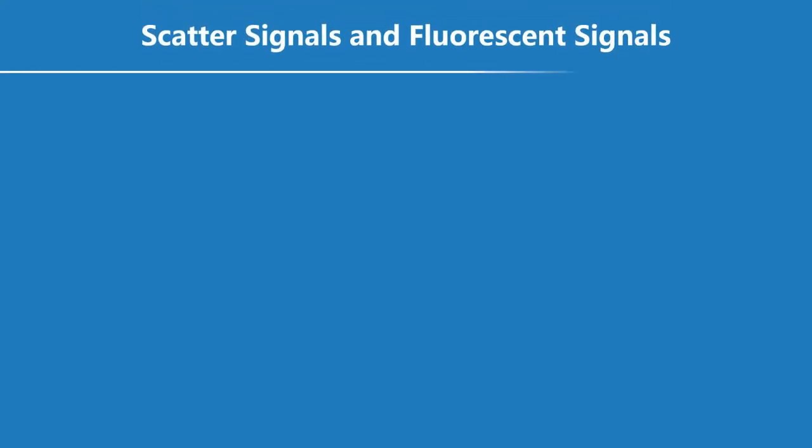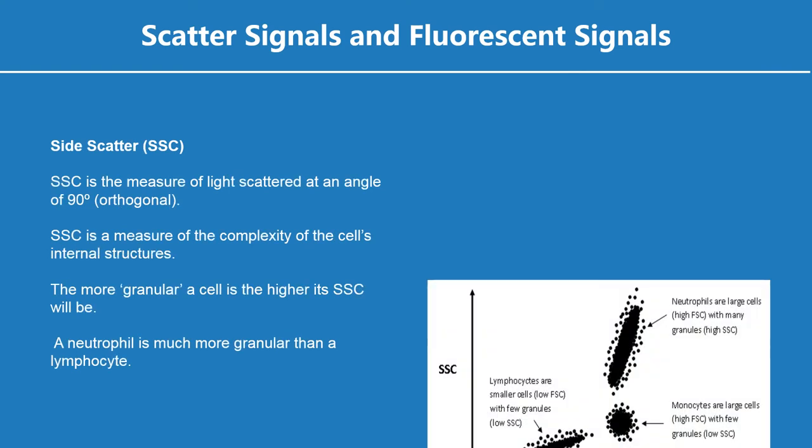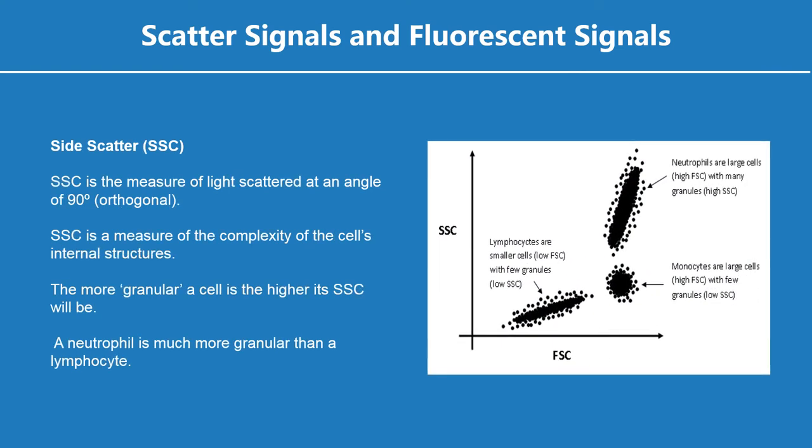Side scatter (SSC) is the measure of light scattered at an angle of 90 degrees. SSC is a measure of the complexity of the cell's internal structures. The more granular a cell is, the higher its SSC will be. A neutrophil is much more granular than a lymphocyte.